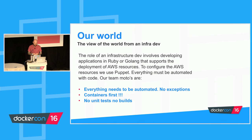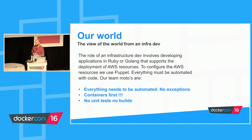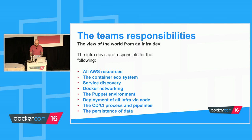The day-to-day life of the infrastructure dev involves writing Ruby, Golang, or Puppet. We look after all AWS resources and we're 100% in AWS — no bare metal anywhere, it's all on EC2. Everything needs to be automated as infrastructure as code, no exceptions. We have the motto 'containers first.' And the hard and fast rule: if there's no unit test on what you've written, the CD pipeline will fail. The team is responsible for all AWS resources, the container ecosystem, service discovery, Docker networking, the Puppet environment, CI/CD pipelines, and the persistence of data.